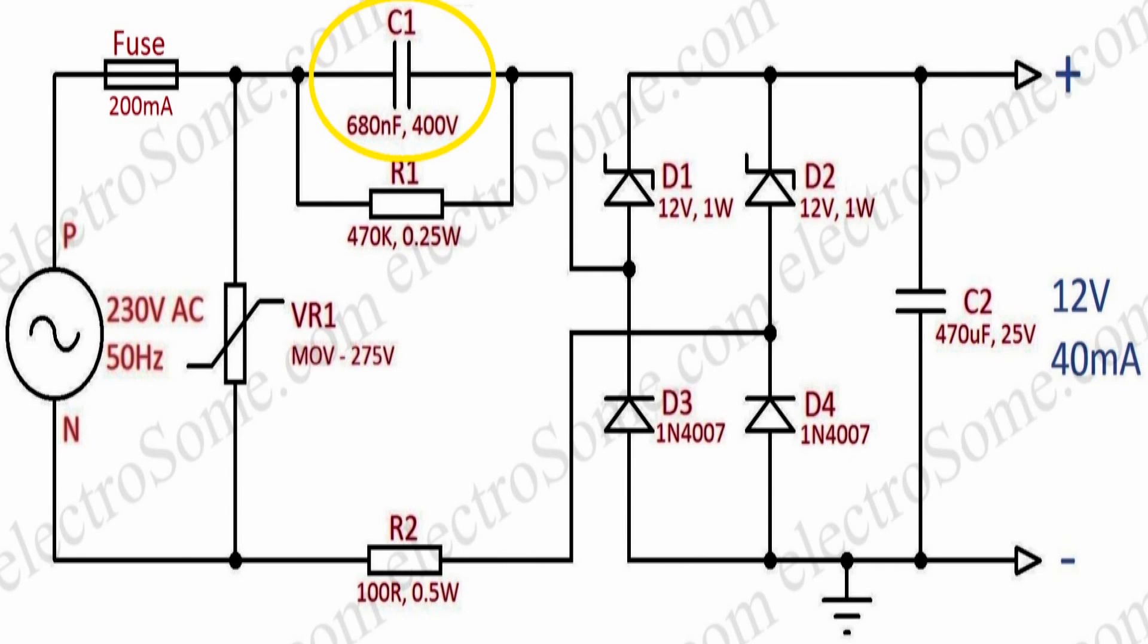The capacitor C1 is the core part of this power supply. It will drop excess voltage across it. Excess power will not be wasted as heat as we are using capacitor dropper instead of resistor. You need to use X-rated capacitors as we are connecting it directly to AC mains.